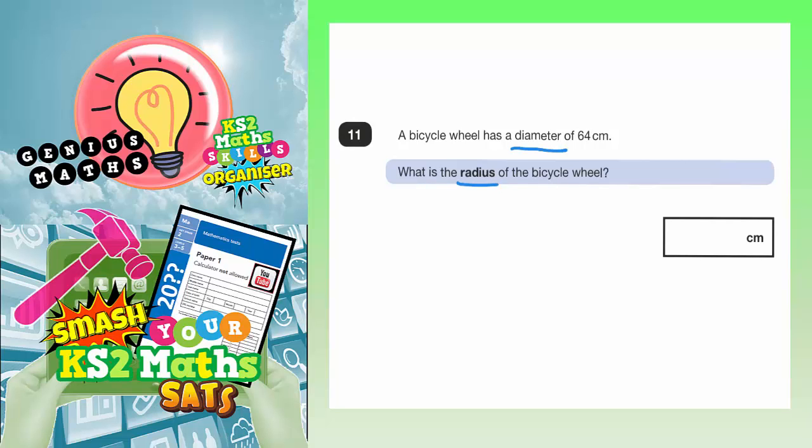Now you need to know what these words diameter and radius mean. So let's draw a couple of circles. So obviously if you imagine the center of the circle, the line which is straight through the middle, that is basically what the diameter is.